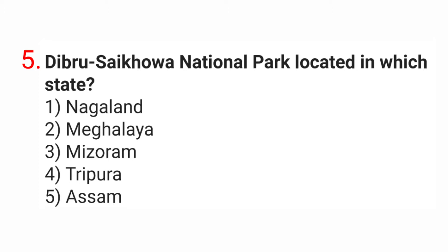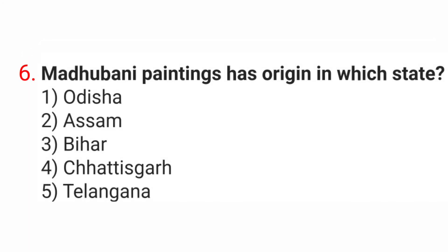Question 5: Dibru Saikhoa National Park is located in which state? Options: Nagaland, Meghalaya, Mizoram, Tripura, Assam. The correct answer is Option number 5, Assam.